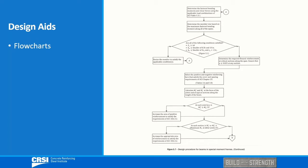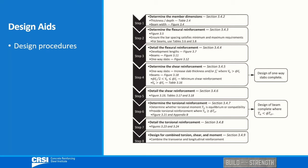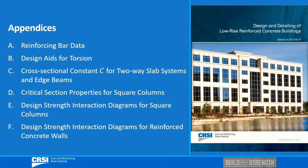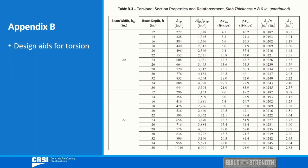Numerous design aids are given throughout the publication, including flowcharts, which are shown here, and design procedures, which provide a roadmap for the code provisions. These time-saving design aids can be used in everyday practice. For example, Appendix B contains torsional section properties and required reinforcement for commonly encountered edge beams and slab thicknesses — no calculations are required to design these members.